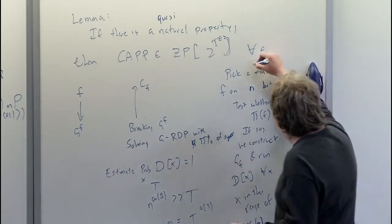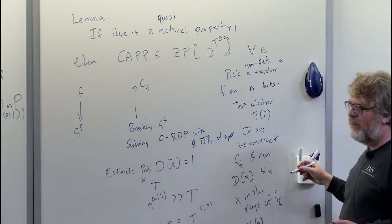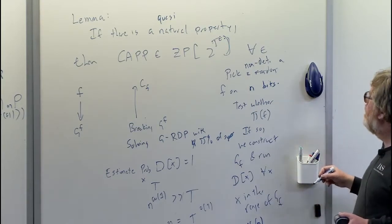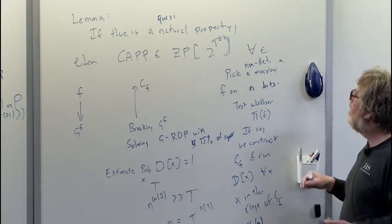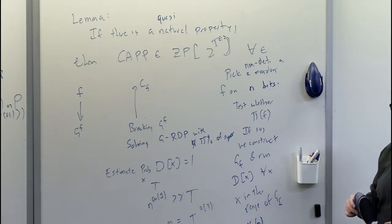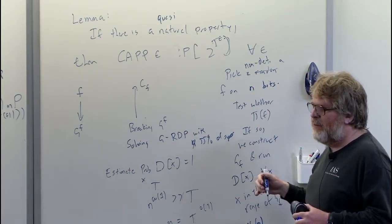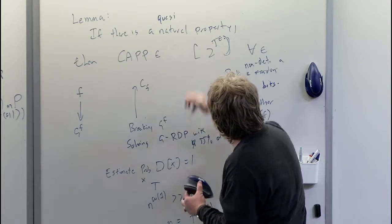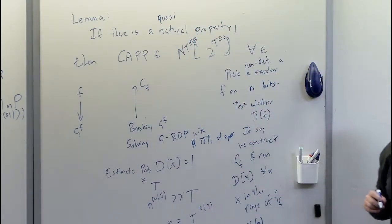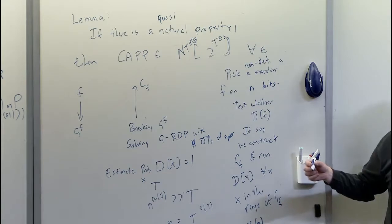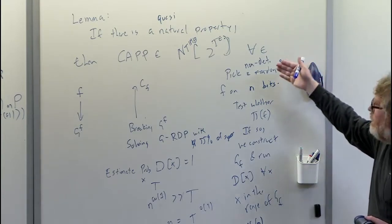Pick non-deterministically a function F on N bits, and the rest of the algorithm stays the same. But because we're changing the model, the conclusion becomes different — you have to change one letter in the statement. ZPP disappears and gets replaced by N, giving non-deterministic time. That's the connection with derandomization: we don't know that BPP equals non-deterministic time, but this would say some non-trivial non-deterministic derandomization of BPP is possible if such things exist.